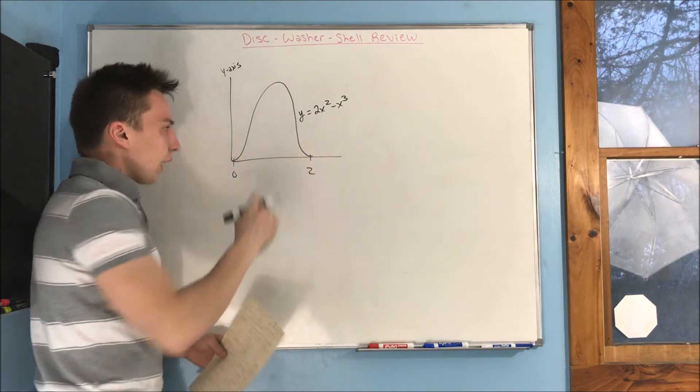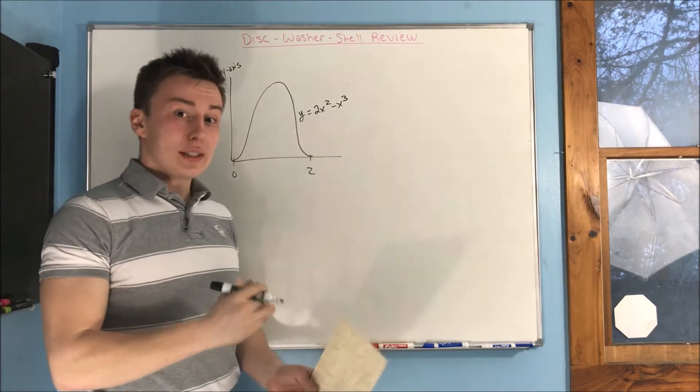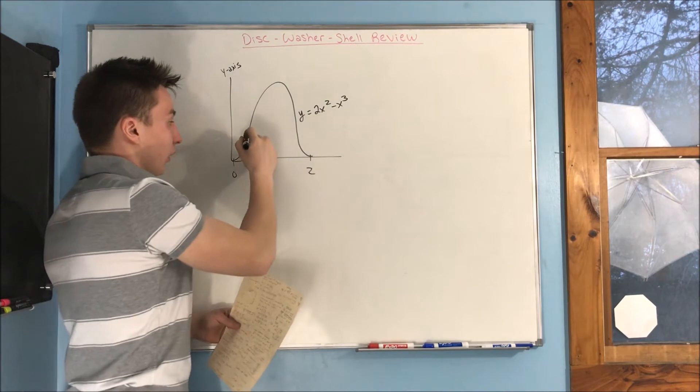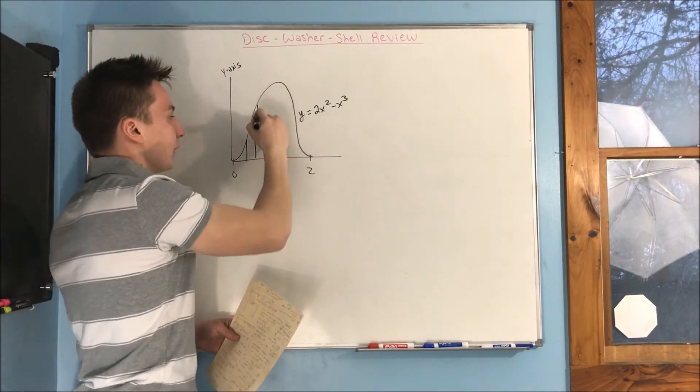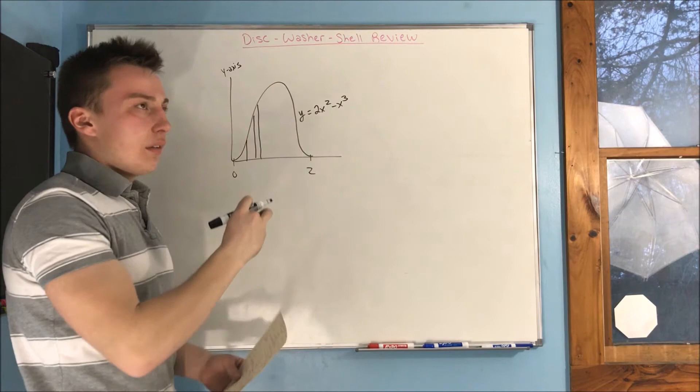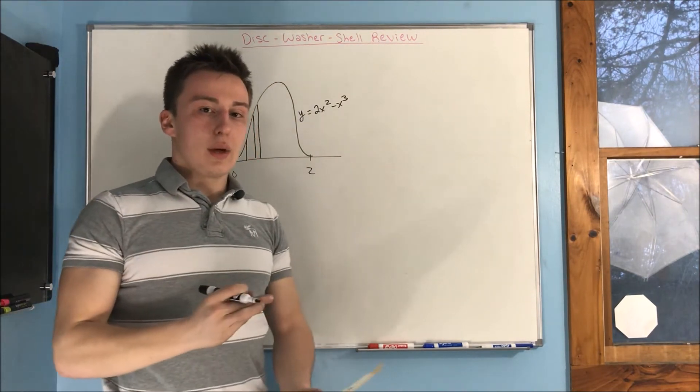Because our cross sections here would need to be horizontal lines. But we can do cross sections that are vertical lines. But these cross sections aren't going to be washers.